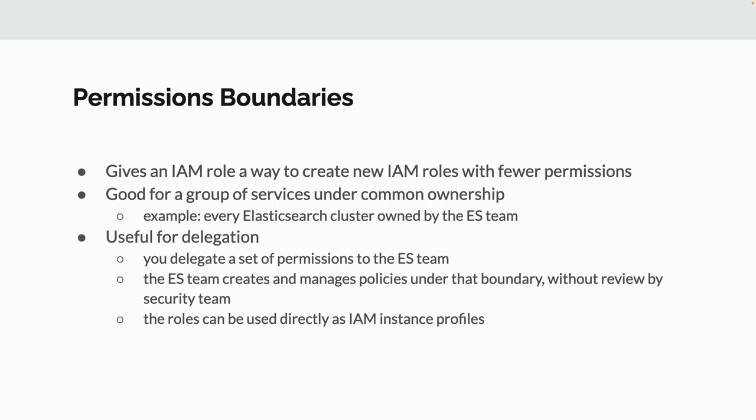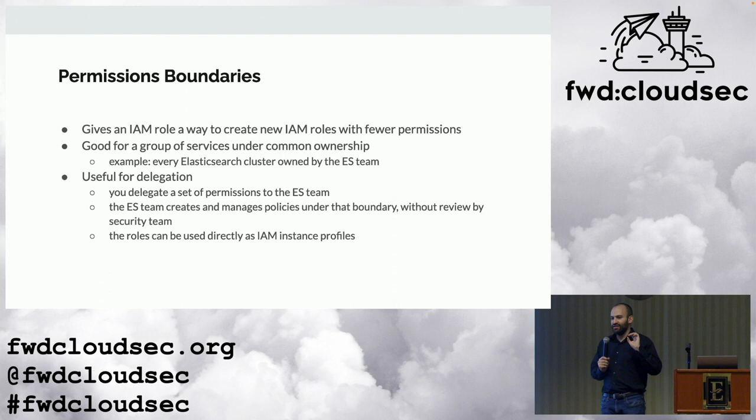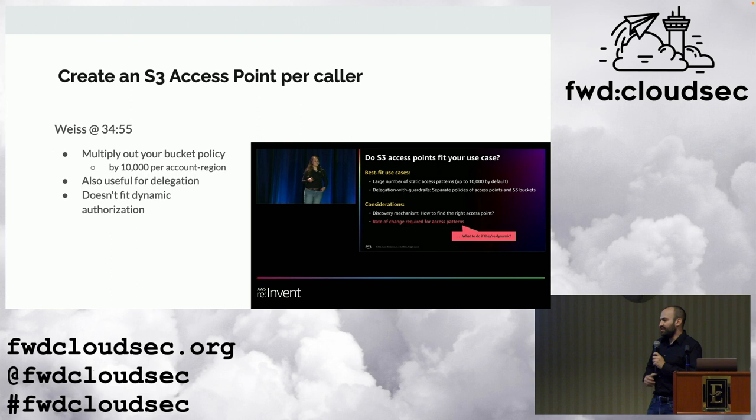Permissions boundaries are a really good way to provide delegation between teams. If I've got an Elasticsearch cluster and I've got an Elasticsearch team that wants to spin clusters up and down with a high degree of flexibility, I can draw a permissions boundary over the broadest set of permissions any Elasticsearch cluster may have and delegate that down to the other team. This allows — especially for EC2 instance profiles — the ability to build a role that suits each type of EC2 service.